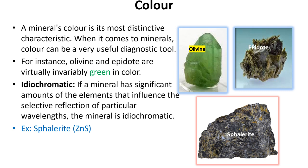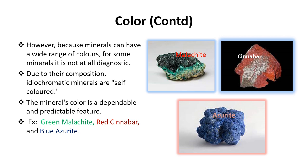What is idiochromatic? A mineral is idiochromatic when it has significant amounts of elements that influence the selective reflection of a particular wavelength, causing it to emit that light. Examples include olivine (green), epidote (green), and sphalerite. Due to their composition, idiochromatic minerals are self-colored and their color is a dependable and predictable feature. For example, malachite is green, cinnabar is red, azurite is blue, gold is yellow, and silver is white.